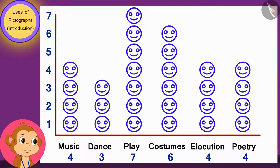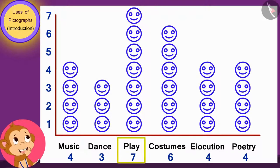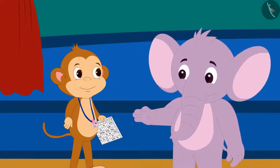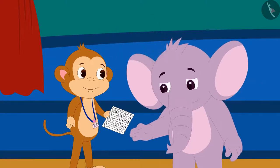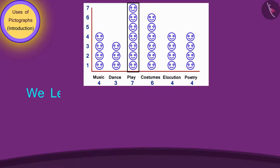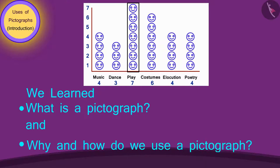Babban got very excited and said to Appu, wow, this is so interesting! Just by seeing the height of these lines made by the faces, I can immediately find out which program has the maximum number of children and which has the least. Appu laughed and said, come, let's quickly make the preparations — there is only a little time left for the program to start. Babban thanked Appu and started his work. In this video, we learned about what is a pictograph, and why and how do we use a pictograph. In the next video, we will learn more about the pictograph.